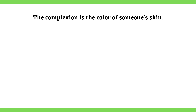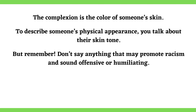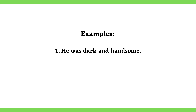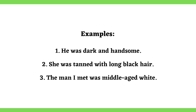Talking about someone's complexion: The complexion is the color of someone's skin. To describe someone's physical appearance, you talk about their skin tone. But remember, don't say anything that may promote racism or sound offensive or humiliating. The purpose of talking about someone's complexion has to be only to describe their appearance, not to talk about their racial identity. Examples: He was dark and handsome. She was tanned with long black hair. The man I met was middle-aged and white.